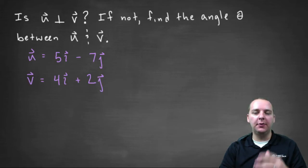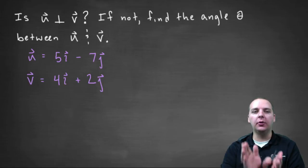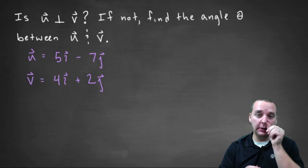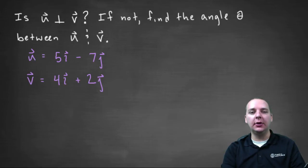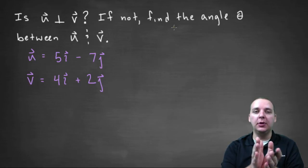For this problem we're being asked if a vector u is perpendicular or orthogonal to a vector v, which means does it meet at a right angle, does it meet at a ninety degree angle. And if not, then they want us to actually find the angle that's between those two vectors if it's not ninety degrees.